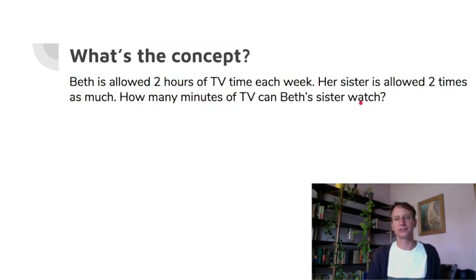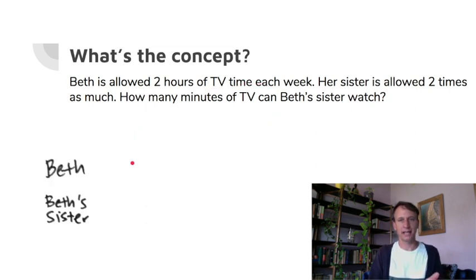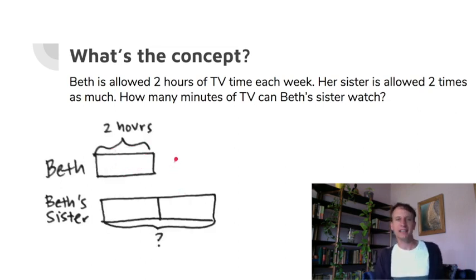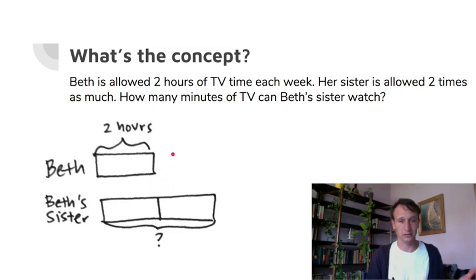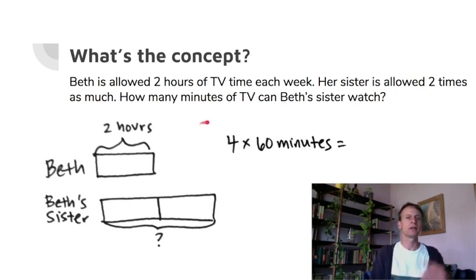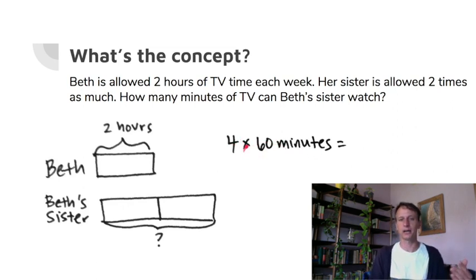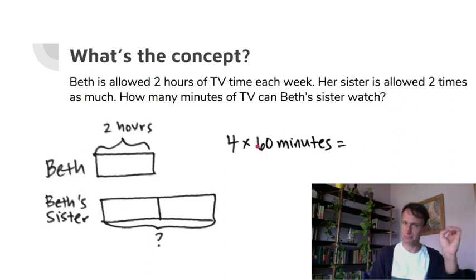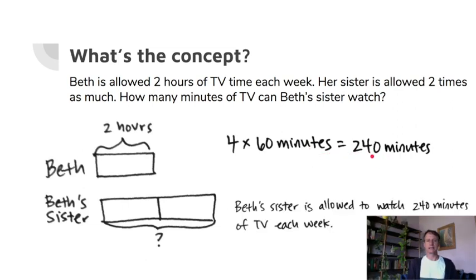Let's draw a tape diagram. Beth gets two hours a week; her sister gets twice as much — two plus two is four hours. But the question asks for minutes, so: four hours times 60 minutes per hour. Four times six is 24, then slide on a zero — 240 minutes. Statement: Beth's sister is allowed to watch 240 minutes of TV each week.